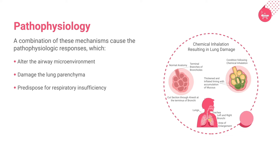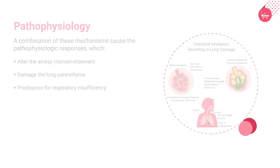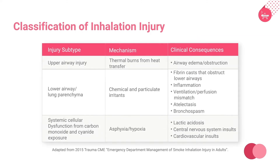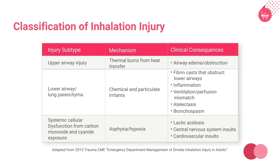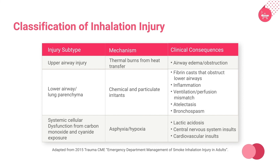The common classification of inhalation injuries based on the location of injury is as follows. An inhalation injury is classified into upper airway injury, lower airway or lung parenchyma injury, and systemic cellular dysfunction from exposure to carbon monoxide and cyanide gases.